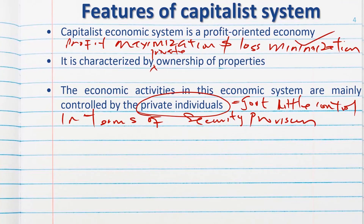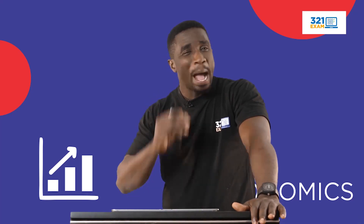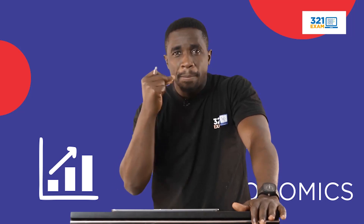The economic activities in this economic system are mainly controlled by private individuals. All products produced are intended for the market because they are for sale or resale. Every product being produced has a targeted market, and that market is exactly what the private individual is concerned about.